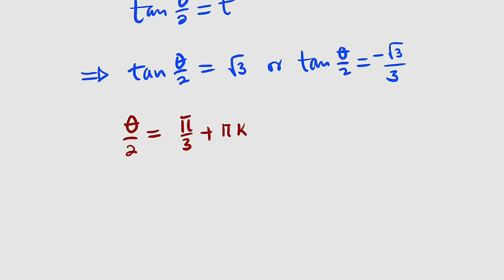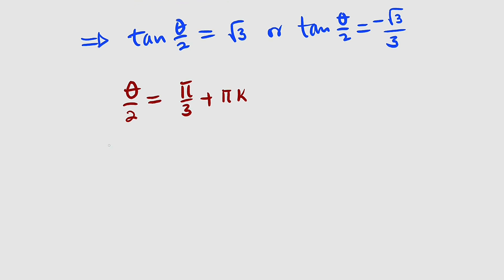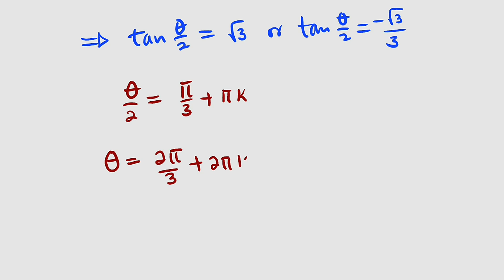For k an integer, multiplying both sides by 2 gives theta equal to 2 pi over 3 plus 2 pi k, where k belongs to the set of integers.